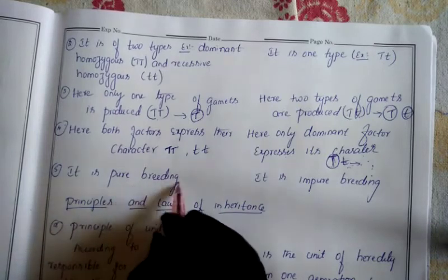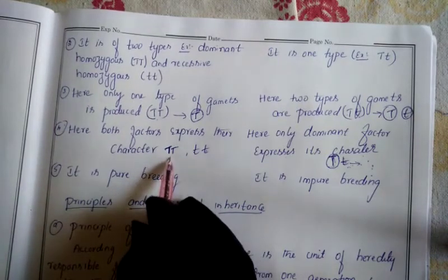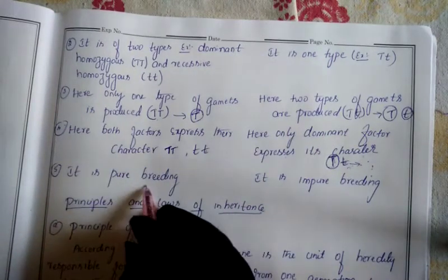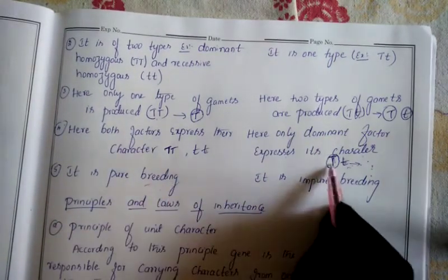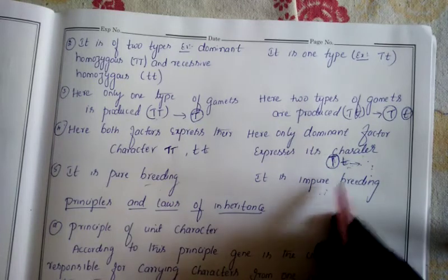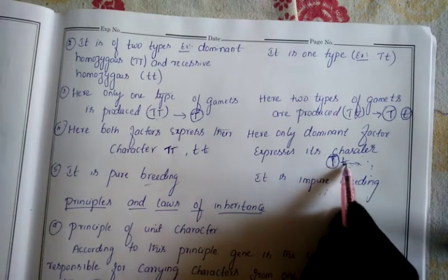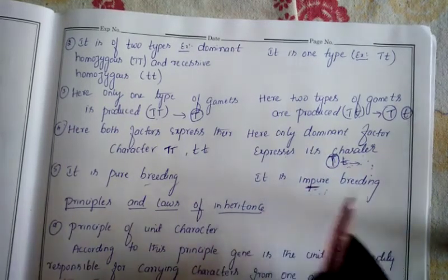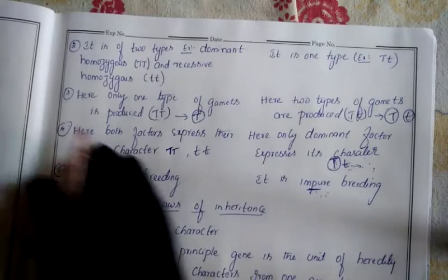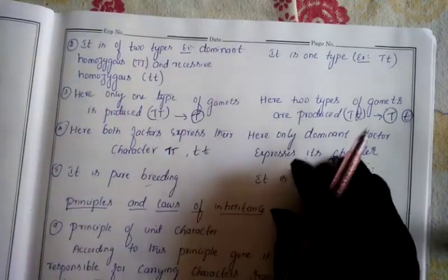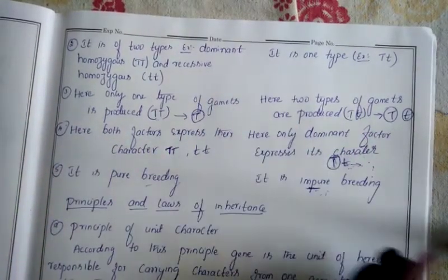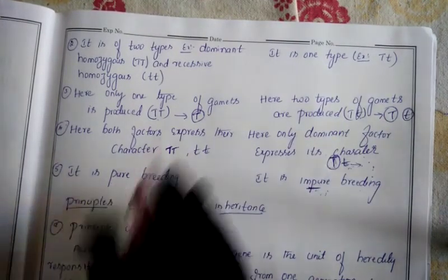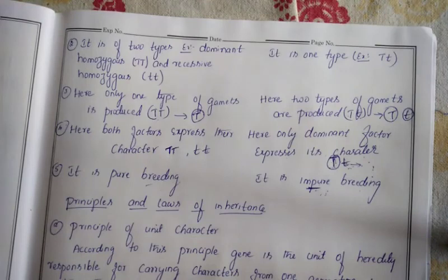In homozygous condition it is pure breeding, because the same characters are transmitted. Heterozygous condition is called impure breeding because it is a mixture - tall character is also there and small character is also there. We'll stop here; remaining topics will be discussed in the next class. If you didn't understand anything, you can ask by calling or contacting me.